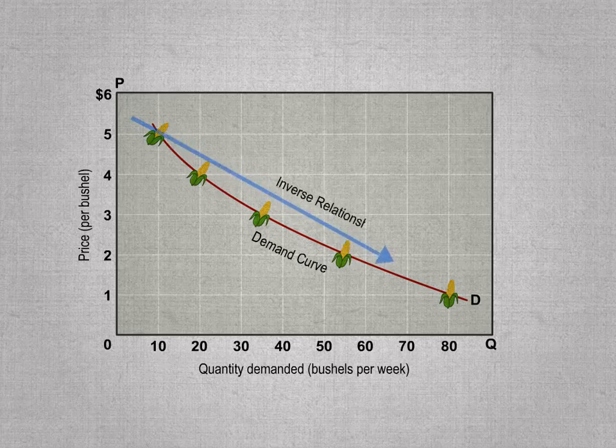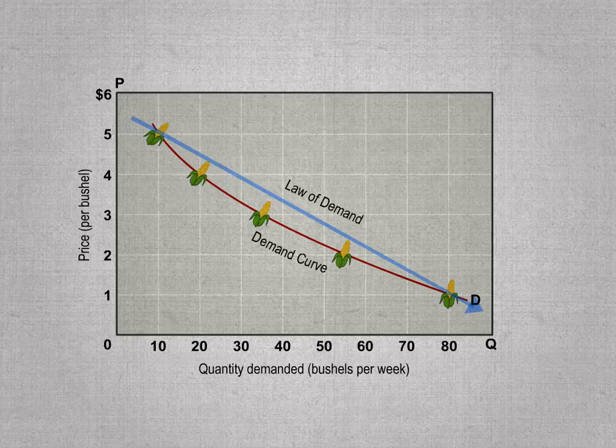The demand curve's downward slope reflects an inverse relationship that economists call the law of demand. What we understand is that, other things equal, consumers will buy more of a product as its price declines and less of it as its price rises.